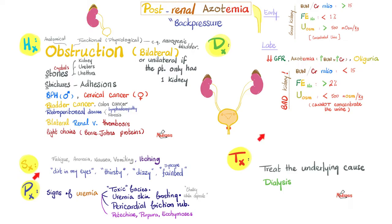Symptoms are the same as pre-renal or intra-renal azotemia: fatigue, anorexia, nausea, vomiting, pruritus, thirst, and dizziness. Signs of uremia include toxic facies, uremic skin frosting with chalky white deposits, pericardial friction rub, painless pericarditis, and petechiae/purpura/ecchymosis — because high uremia interferes with platelet function by inhibiting the platelet receptor GP2B3A, responsible for platelet aggregation, causing a primary hemostasis defect.